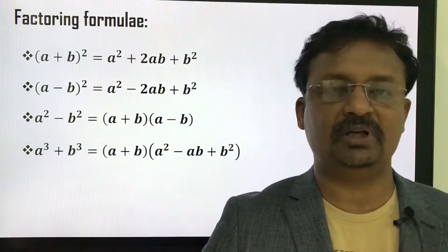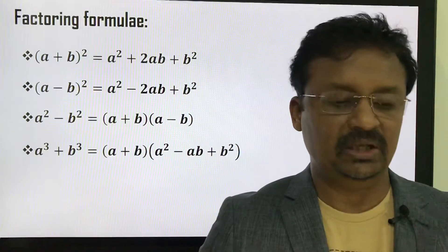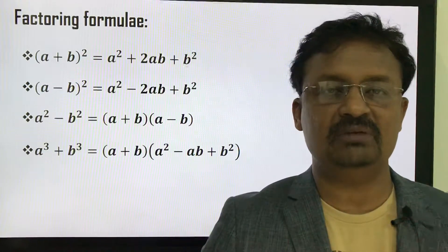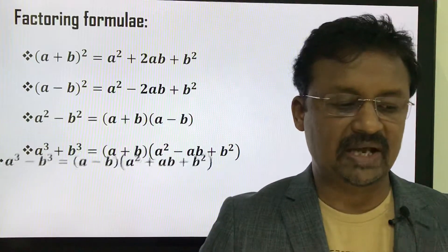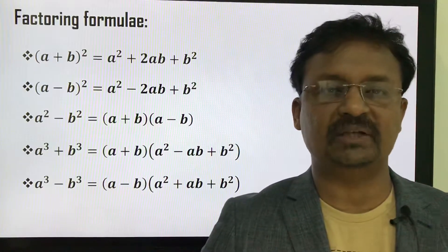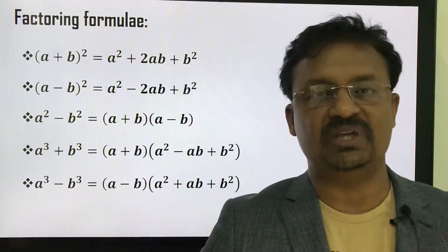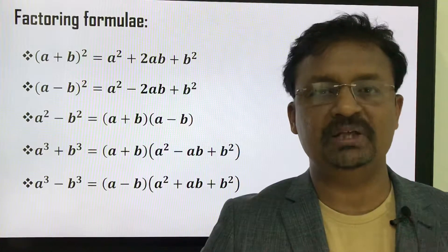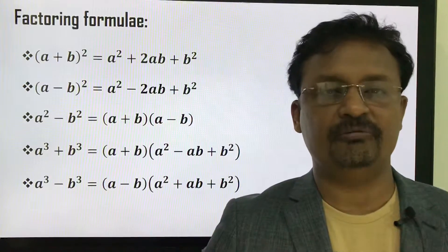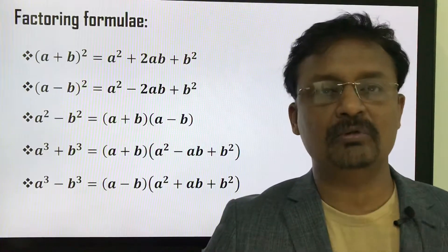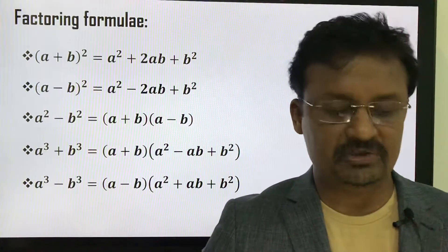Number 4: a³ + b³ = (a + b)(a² - ab + b²). And lastly, a³ - b³ = (a - b)(a² + ab + b²). If you are thorough with this set of factoring formulas, you can do all the simple problems based on factorization.